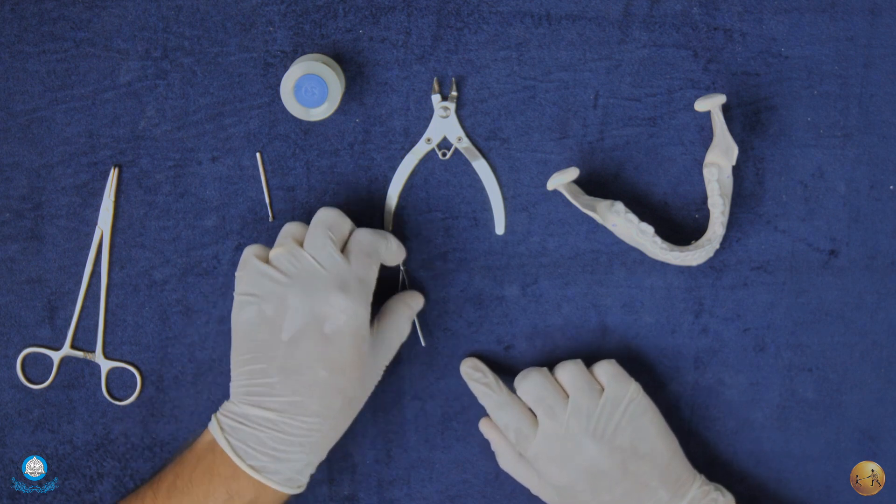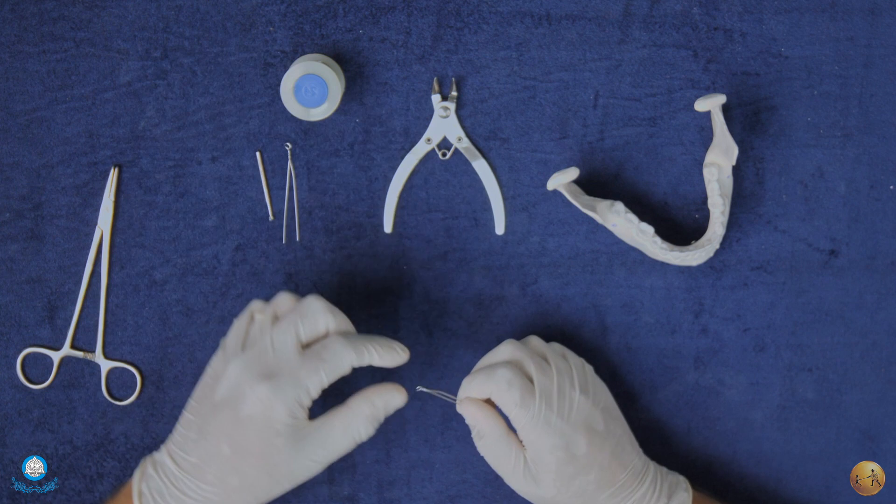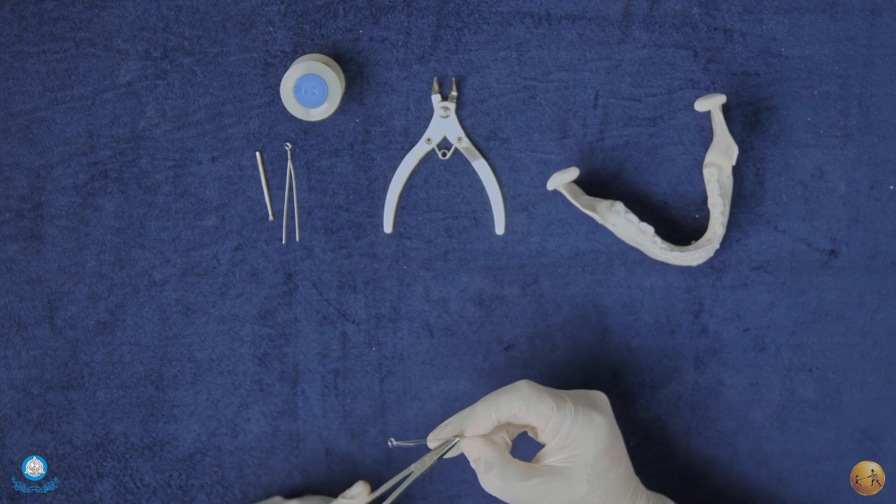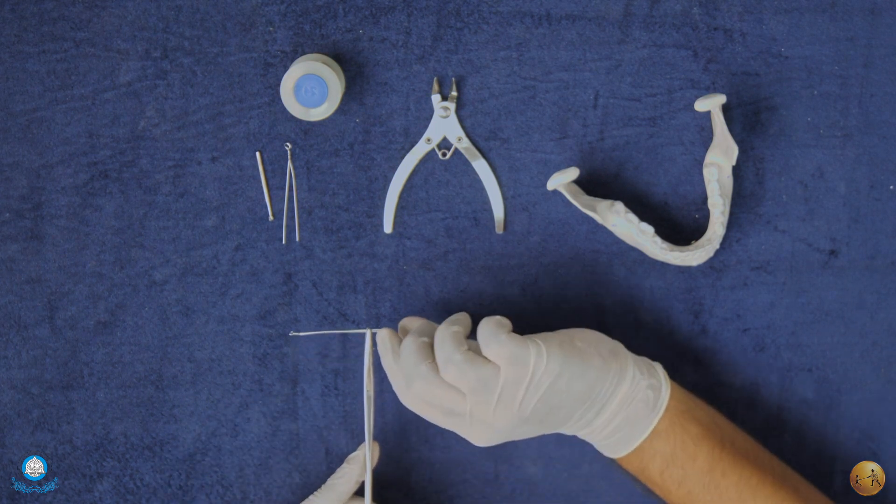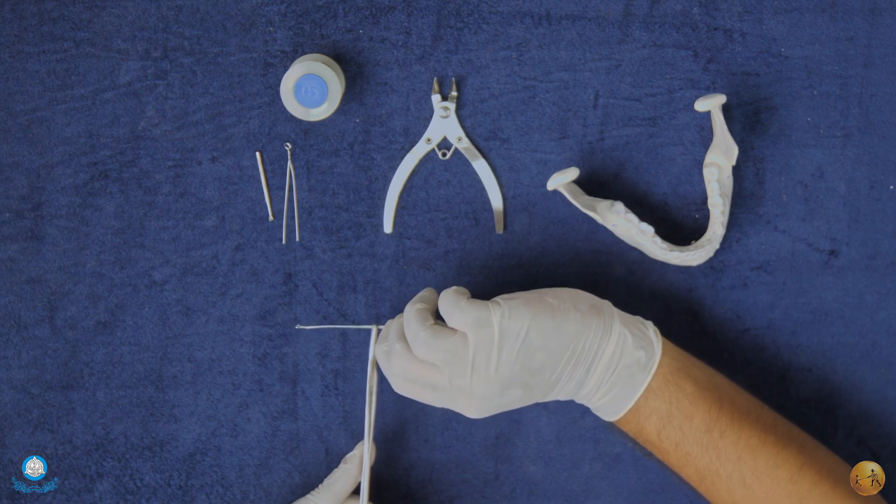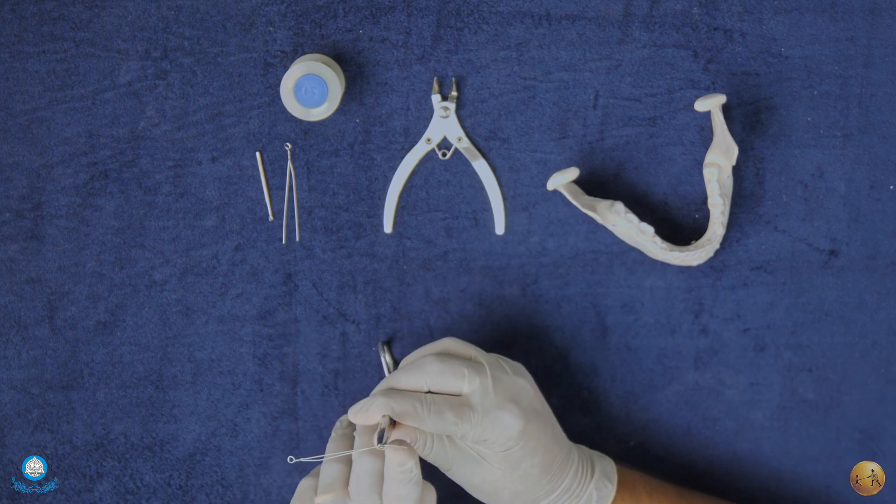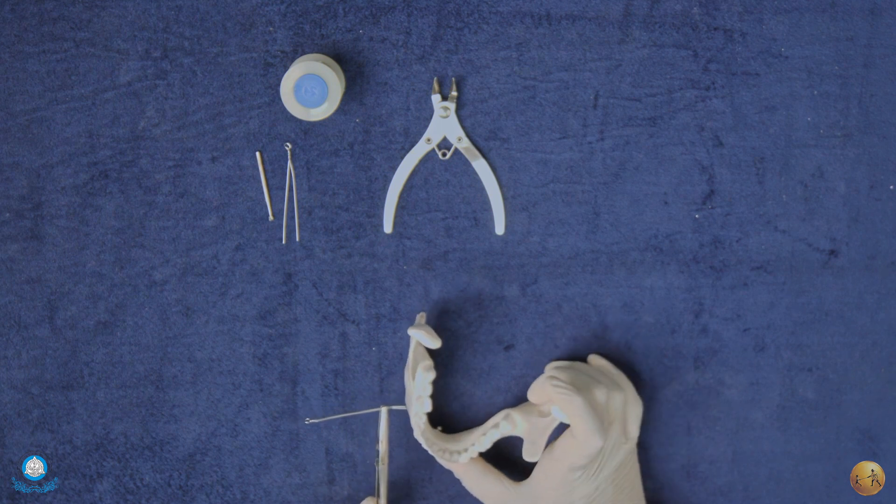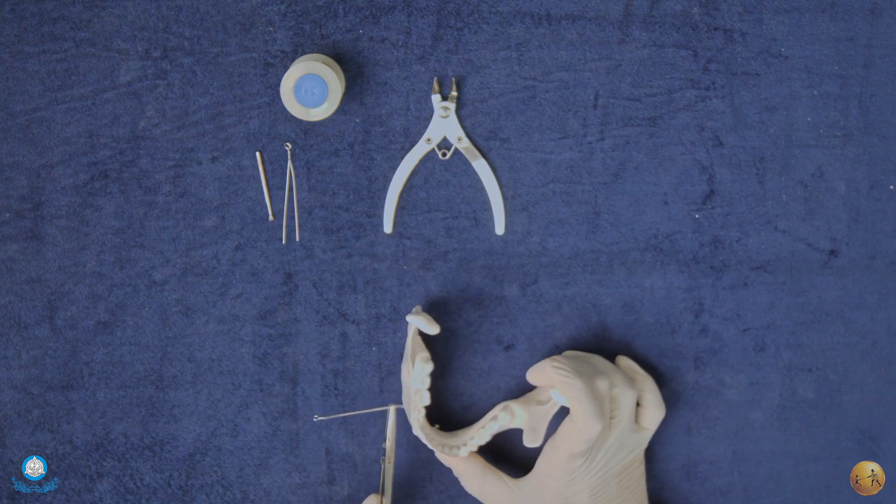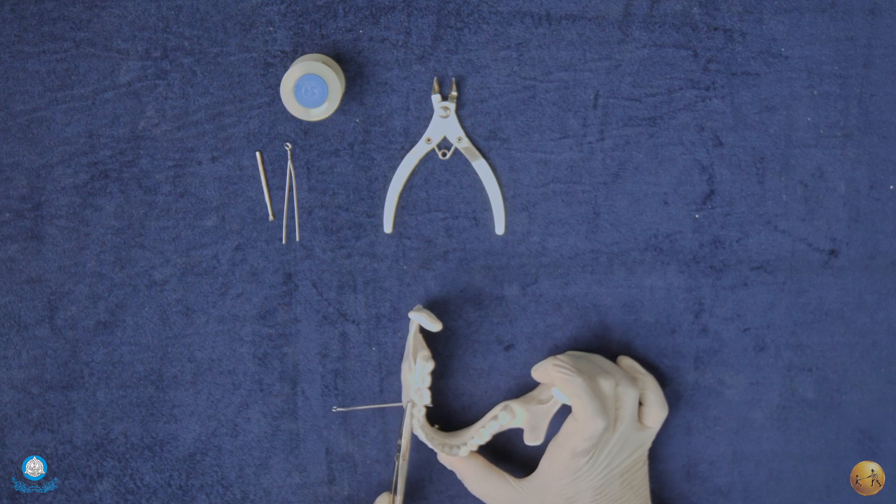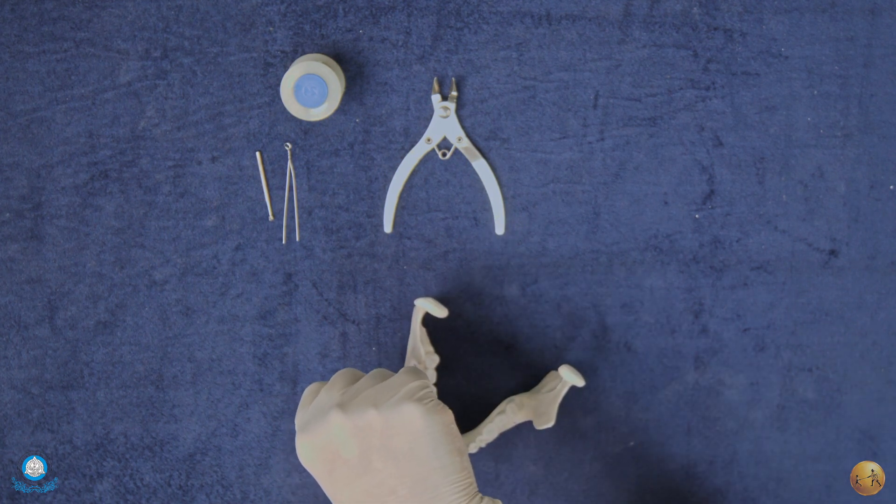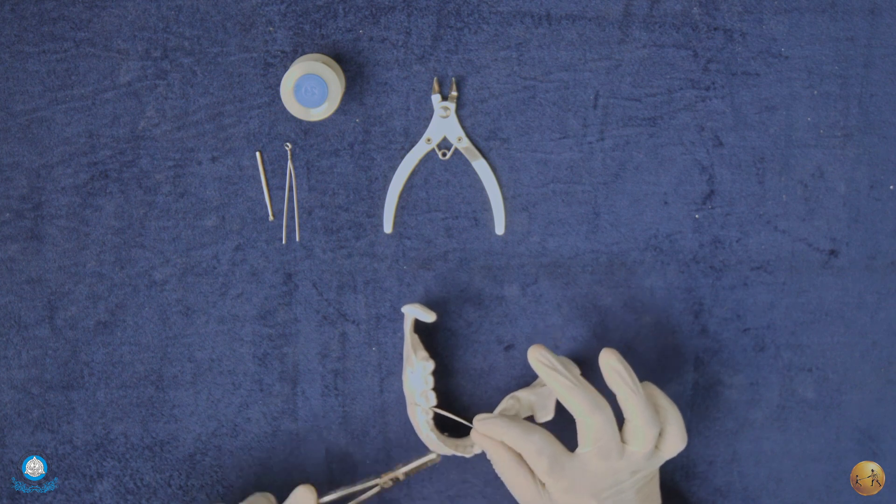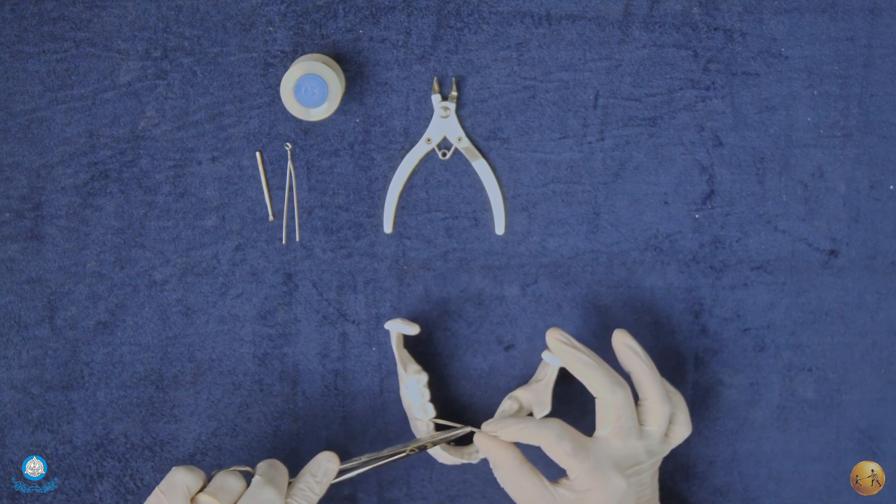Now we'll be using one of these eyelets to secure the mandible. Ensure that you hold the tails sufficiently away and you give a gentle curvature to the tails of the eyelet. The eyelet is then passed between the teeth that are of concern. You pass the eyelet.